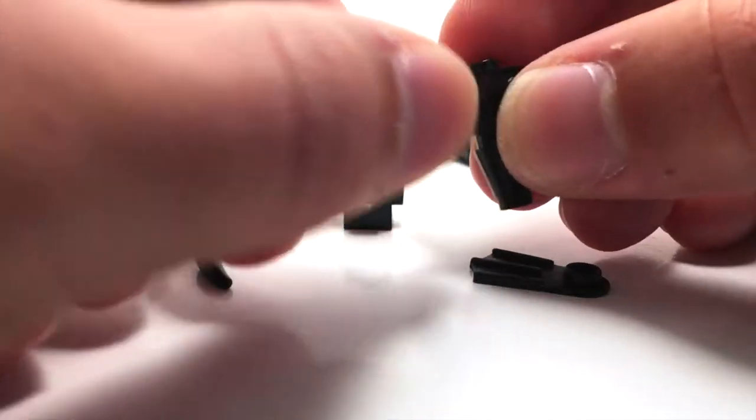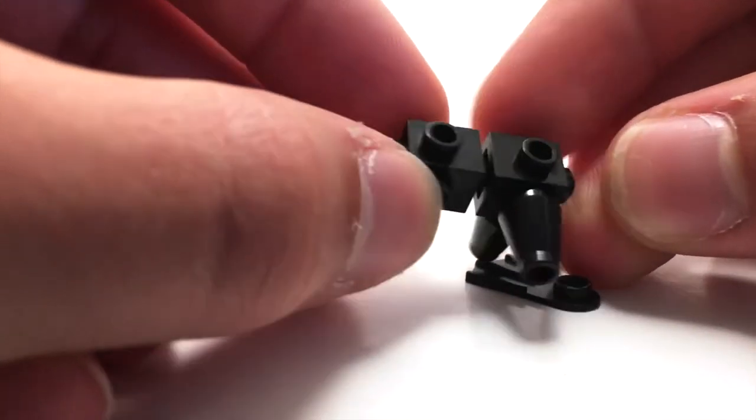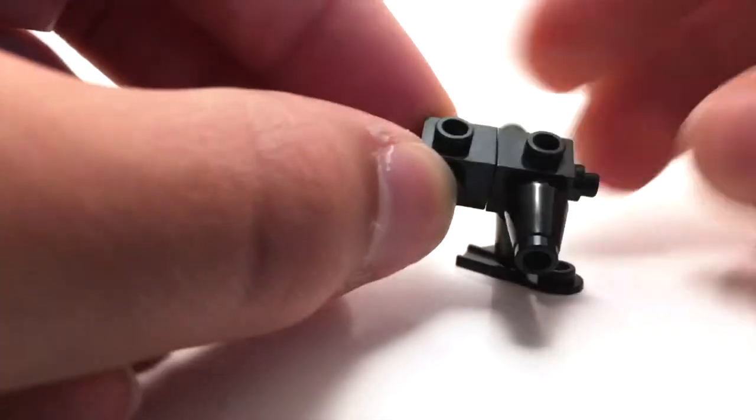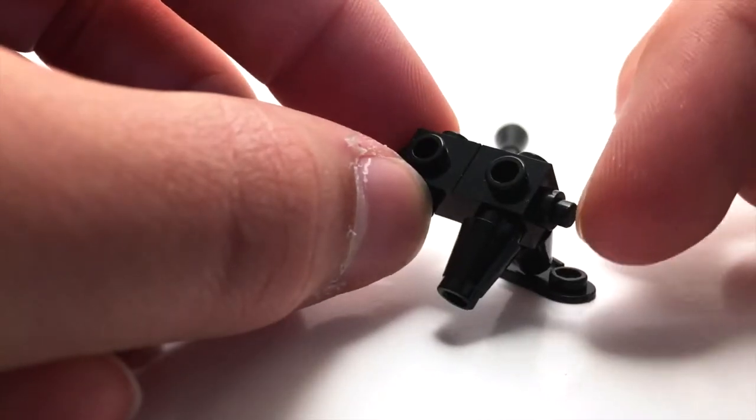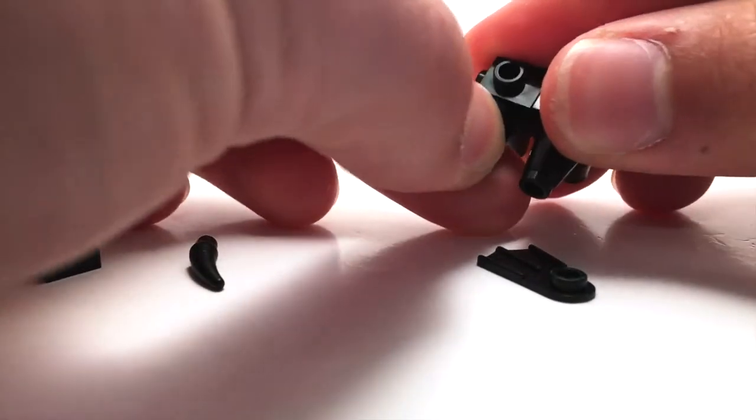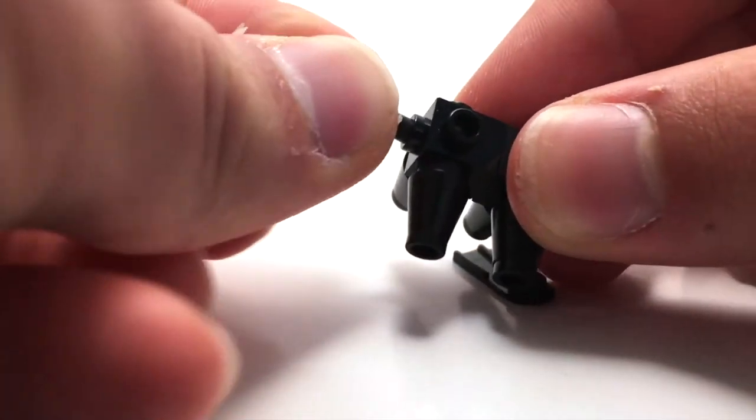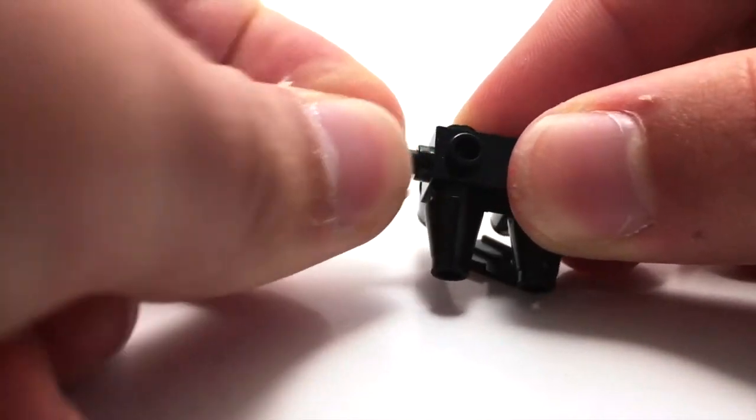So here we've got the body, which is built up using these 1x1s with studs on all sides, and we attach them using this nice little bar here, and these legs are just 1x1 cones. Then we have this little tail that pops into the back, just like so.